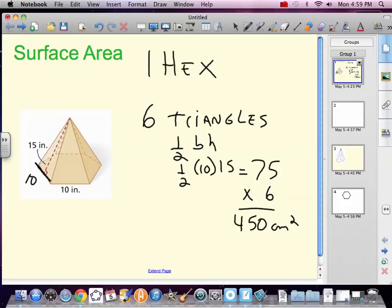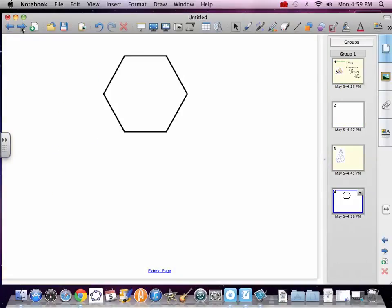Hex, well they only give us one thing on the hex. So remember we've got to break a hex up into triangles. Let's break our hex up into triangles. Again the sides were 10. We're going to break it up into triangles and we'll have six equal triangles with side 10.